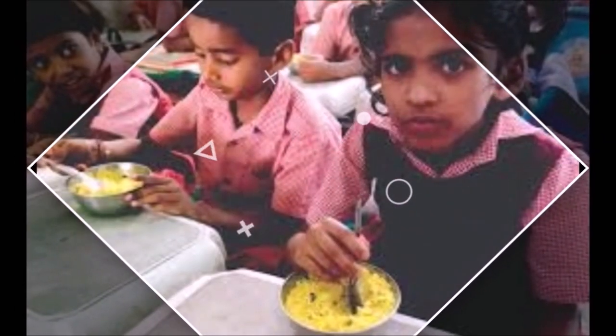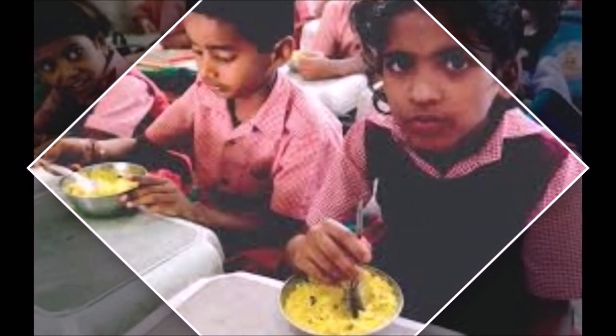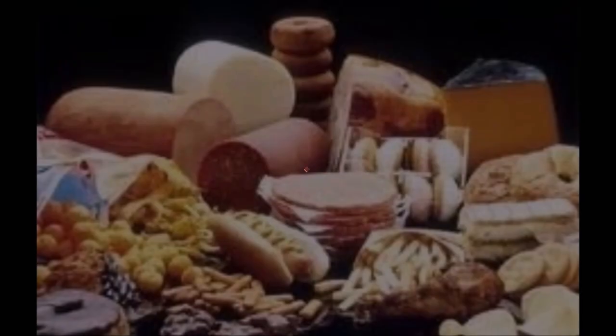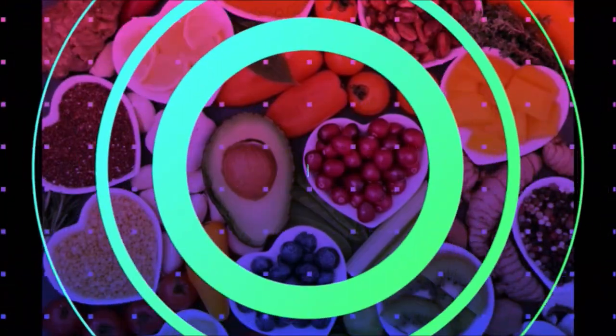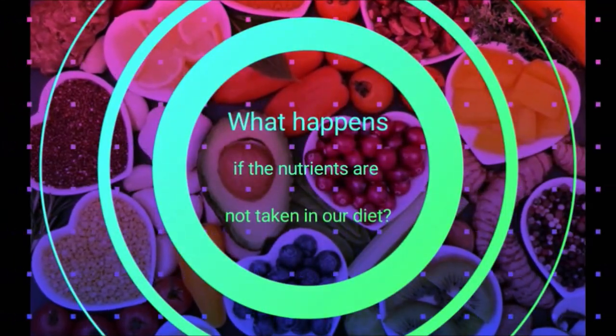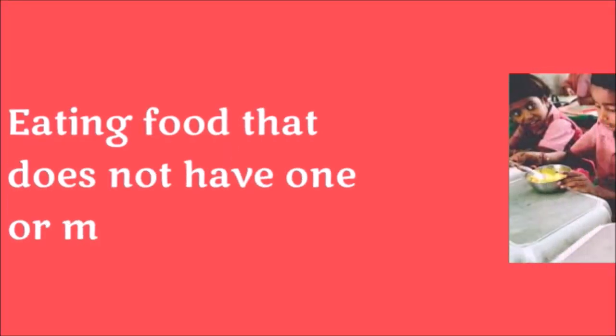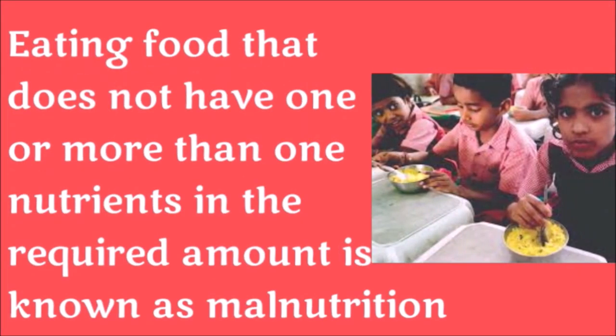But most children are facing food-related problems, either by lacking proper food or by taking high calorie food. What happens if the nutrients are lacking in our diet? Eating food that does not have one or more than one nutrient in the required amount is known as malnutrition.